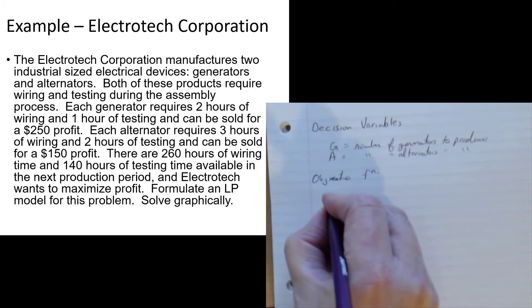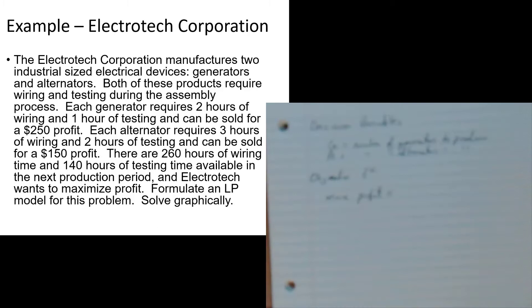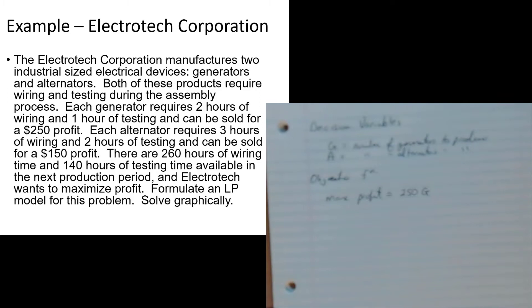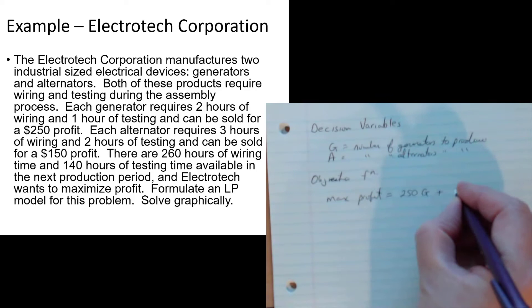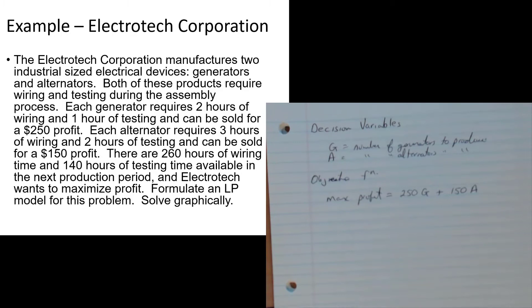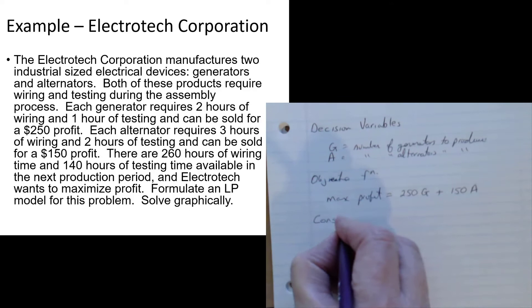My next step is the objective function. I know I want to maximize profit. I get $250 for each generator times the number of generators produced - that's my total profit from the generator business. I add to that the $150 I get from each alternator times the number of alternators I produce, giving my total profit from the alternator business. Add them both together and there's my maximum profit: maximize 250G plus 150A.